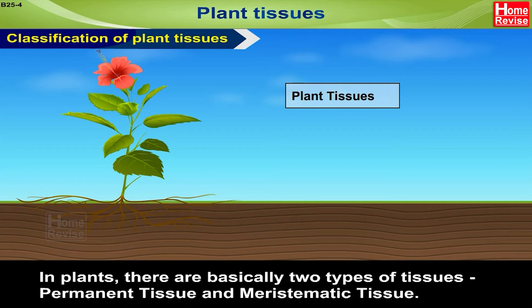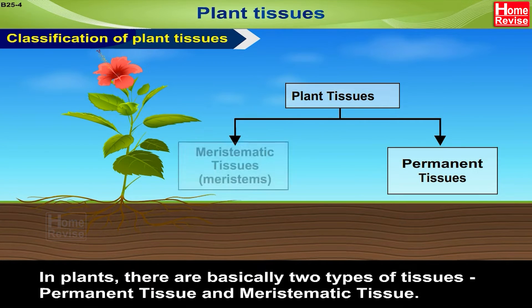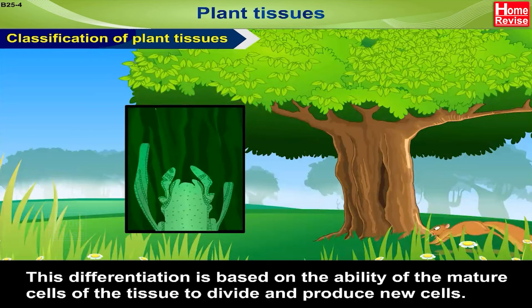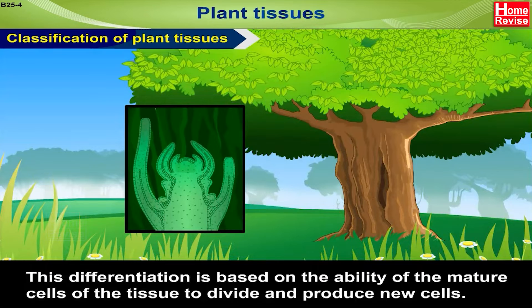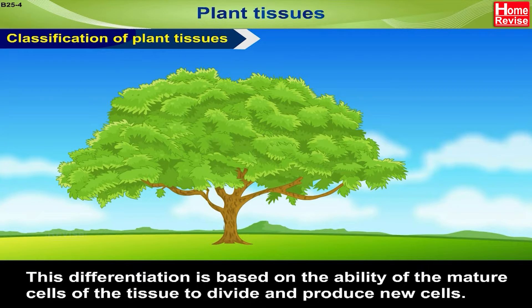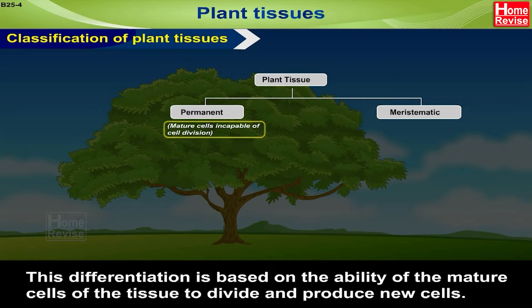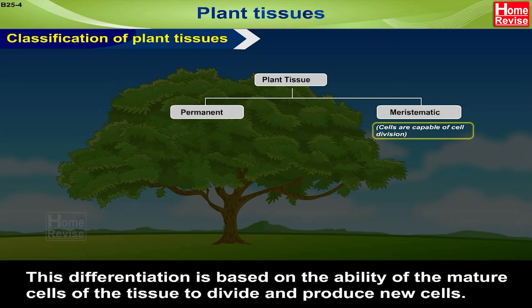In plants, there are basically two types of tissues: permanent tissue and meristematic tissue. This differentiation is based on the ability of the mature cells of the tissue to divide and produce new cells. Permanent tissue is made up of mature cells incapable of cell division, and meristematic tissue is made up of cells capable of cell division.